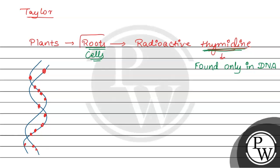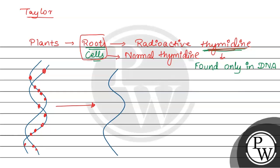तो इन cells को बाद में second step में normal thymidin containing medium में डाल दिया. अभी इन्होंने इन cells को divide करने के लिए छोड़ दिया — तो यह DNA जो है, यह duplicate करेगा.